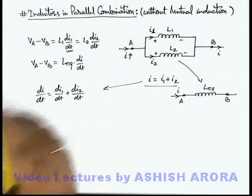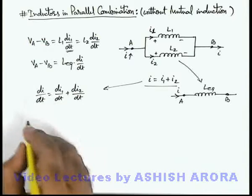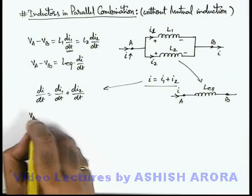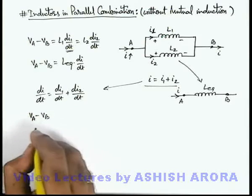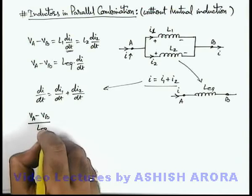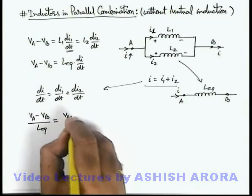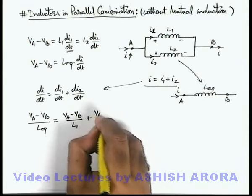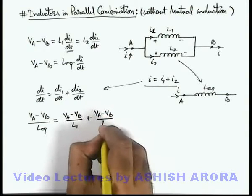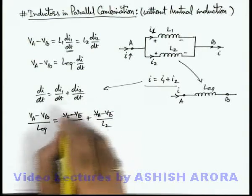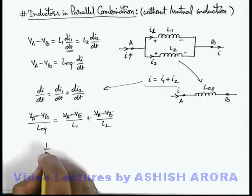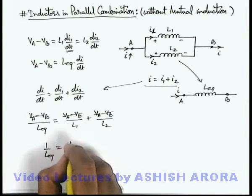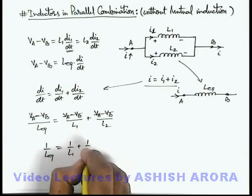And similarly di/dt we can substitute from here. See what result we are getting: VA minus VB upon Leq is equal to VA minus VB upon L1 plus VA minus VB upon L2. Here this term in numerator gets cancelled out. We are getting 1/Leq is 1/L1 plus 1/L2.